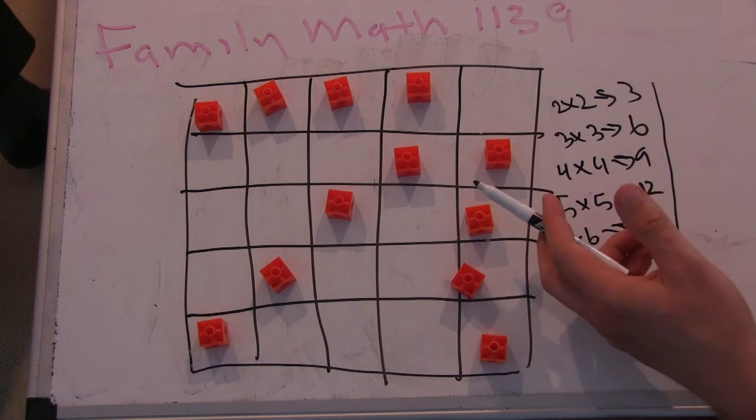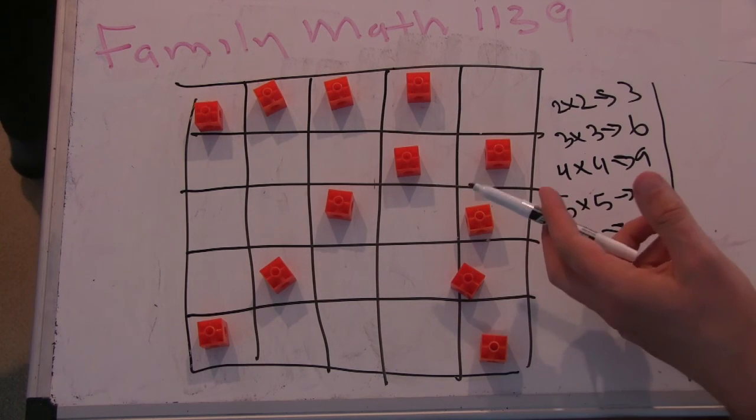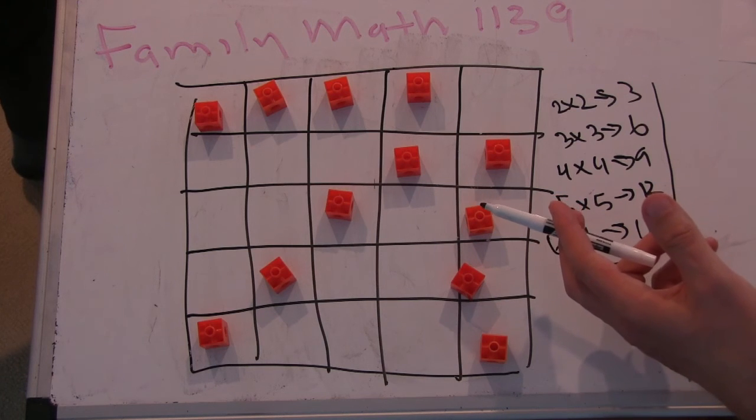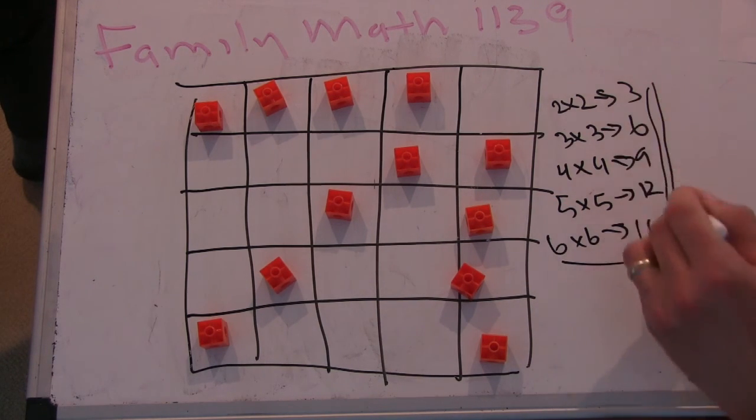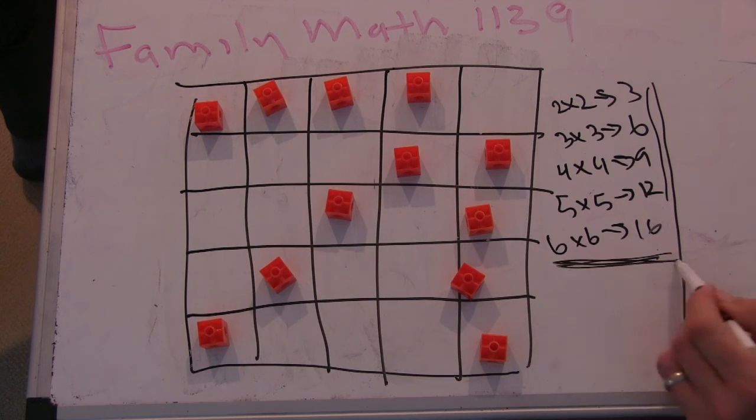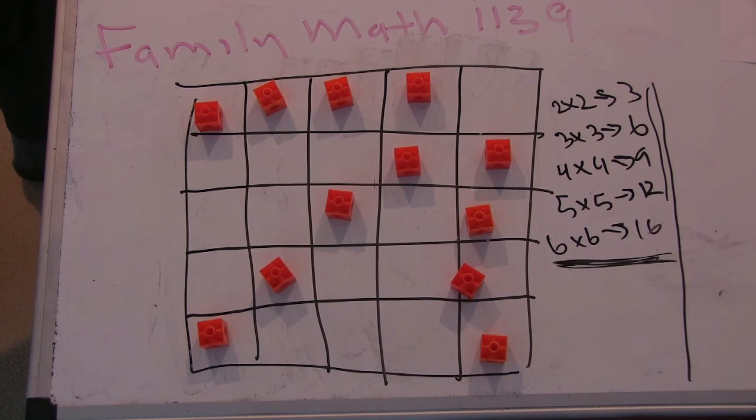So you can start to see here that for 12, proving this is the max is starting to get a little harder. Yep. And then, however, the techniques we've used to prove that these were the maxes up to now sort of actually don't get hard at 6x6. They actually don't work, because for 6x6 it's... I'm pretty sure it's 16.